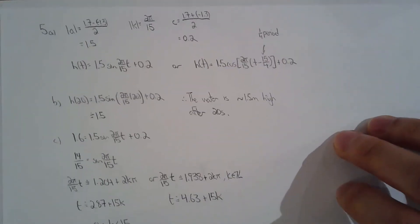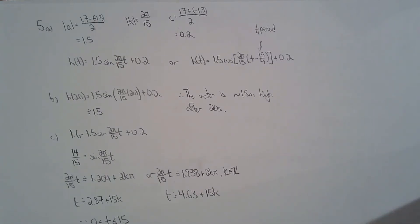All right, two more. Question five is a water wheel question. Basically, you generate the model. They want a sine and a cosine, so I gave them sine and cosine.